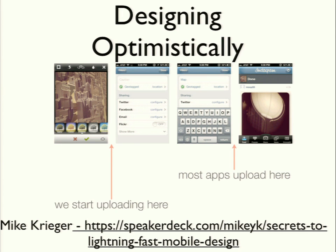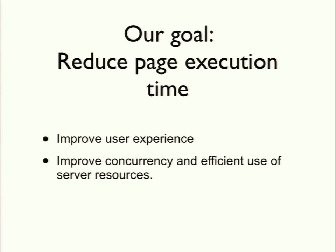Designing optimistically — this is something I'm not going to talk about in detail, but I highly recommend that everybody check out this presentation by Mike Krieger of Instagram. It covers really simple concepts on how they designed to make the application appear to perform more quickly, even though technically it's not necessarily sending data any more quickly than another app. So our goal with XHProf is to reduce page execution time, improve the user experience, and also improve the concurrency and efficiency that the server can serve with the given set of server resources.